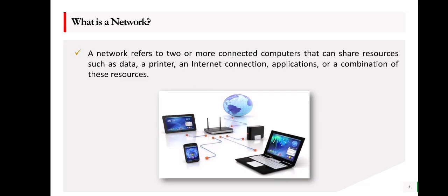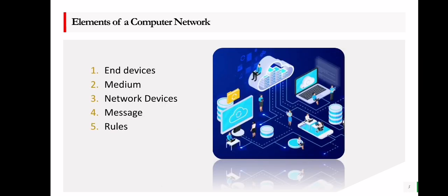Let us first define what a network is. A network is a collection of two or more computers that can share resources such as data, a printer, an internet connection, an application, or a combination of these. There are five different elements of computer networks — let us discuss them one by one.